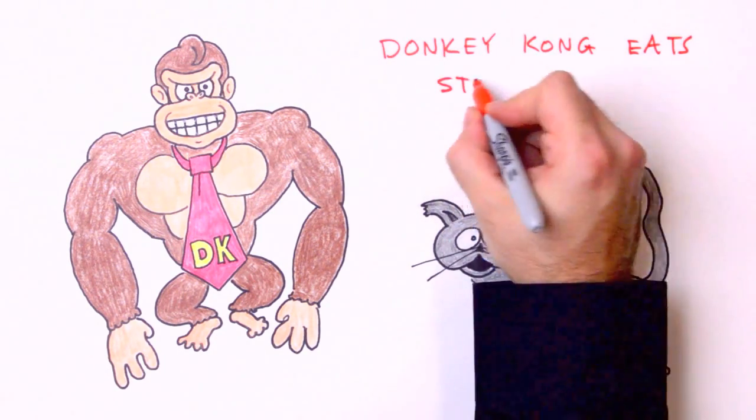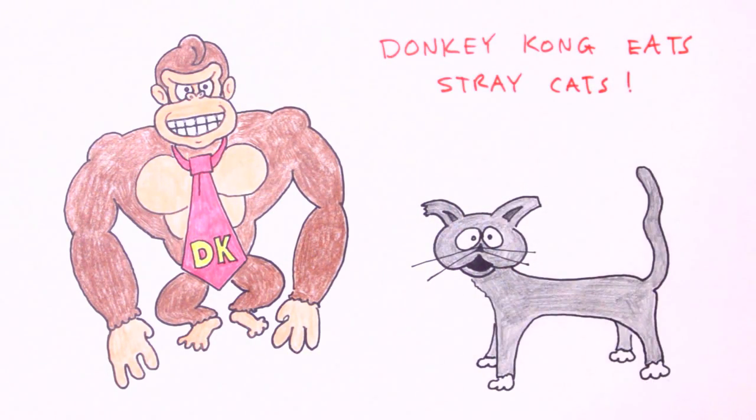Donkey Kong eats stray cats. No, it's not very humane, nor is it even accurate. Everybody knows that DK is a strict banana-vore. But such a hilariously graphic mnemonic device is pretty hard to forget. And that's the mark of a good mnemonic device.